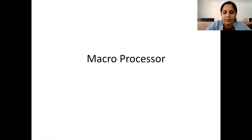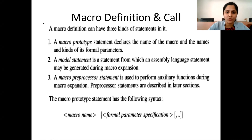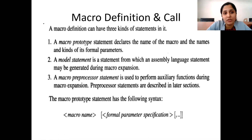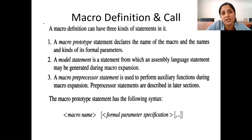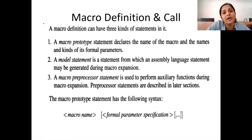Welcome to the lecture on system programming. Today we will be discussing details of the working of the macro processor. I will let you know the parameters or the set of keywords which are reserved for macro expansion. In the last unit, we discussed how the assembler works, which instructions it supports, and which types of instructions it has. On similar lines, macro is also one of the facilities provided for use in assembly programs.